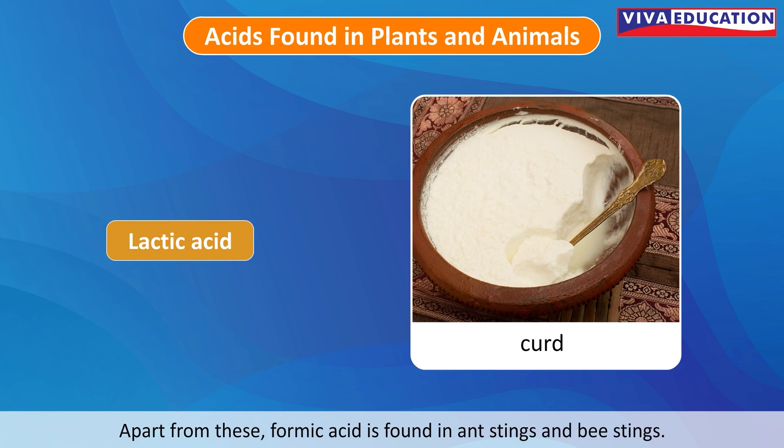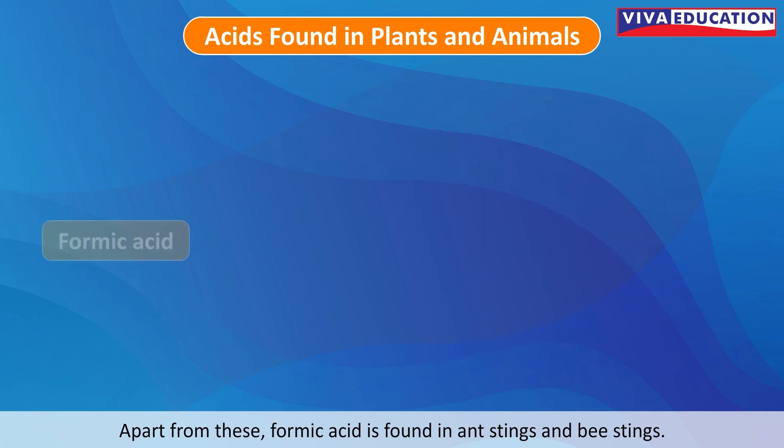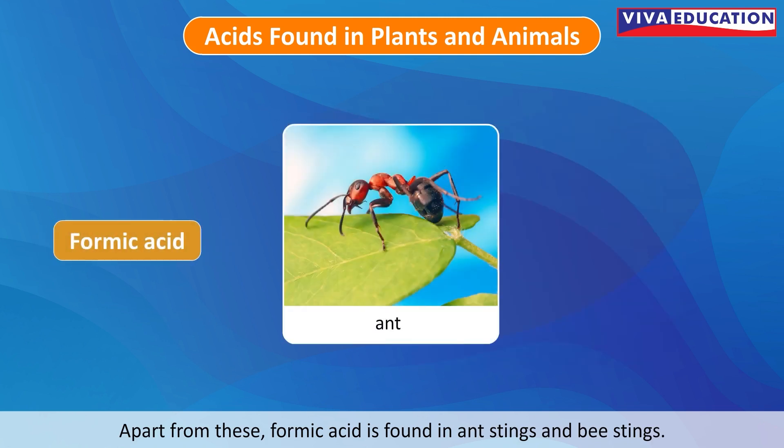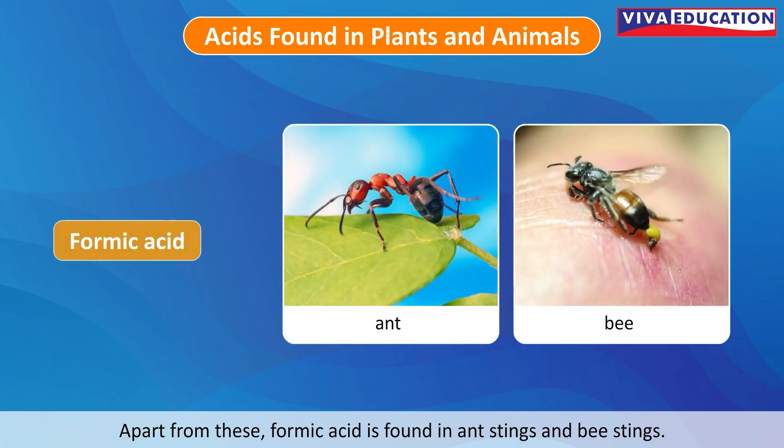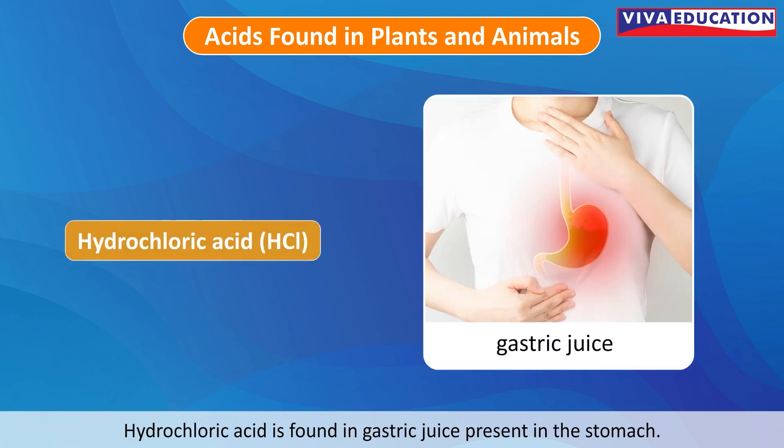Apart from these, formic acid is found in ant stings and bee stings. Hydrochloric acid is found in gastric juice present in the stomach.